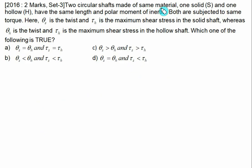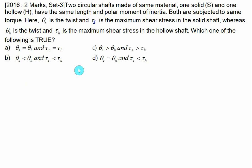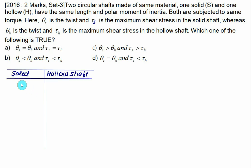Two circular shafts made of the same material — one solid and one hollow — have the same length and the same polar moment of inertia. Both are subjected to the same torque. θ_s and τ_s are the twist and maximum shear stress for the solid shaft; θ_h and τ_h are the corresponding values for the hollow shaft. We need to determine which equation is true.